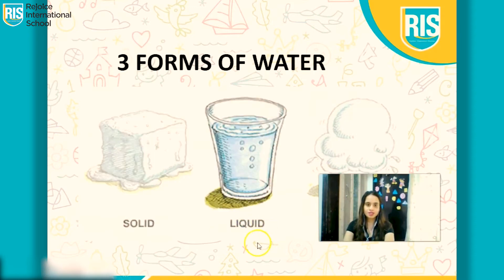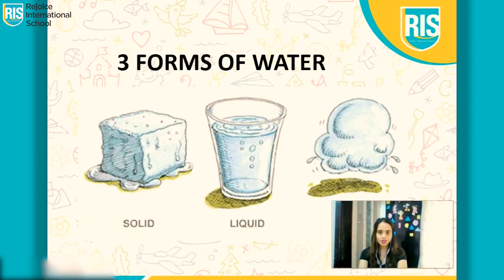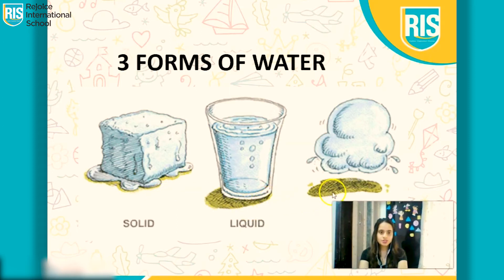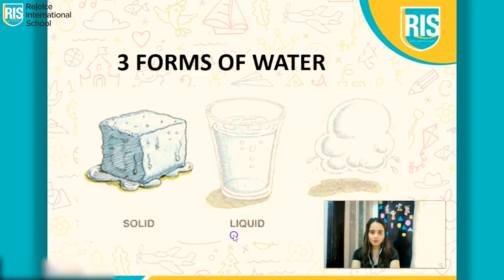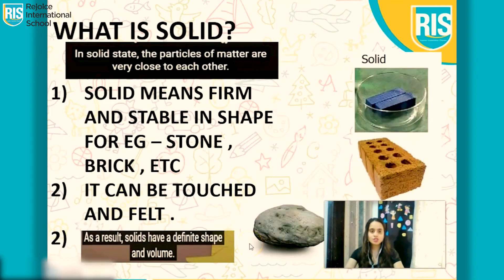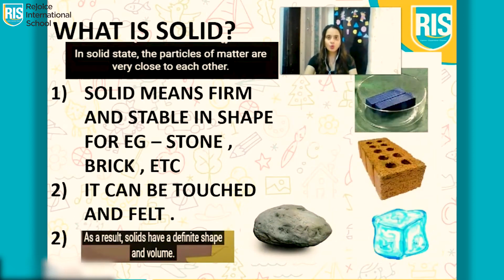So here we go. Can you see over here the picture? Solid, Liquid, and Gas. You know what is Solid? Solid means firm and stable in shape. Can you see the stone, brick, ice — they are all very stable.